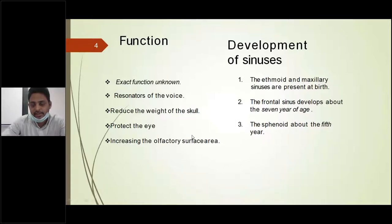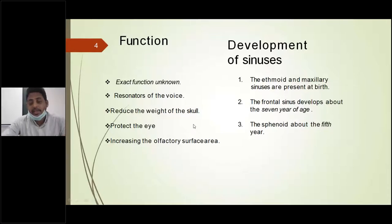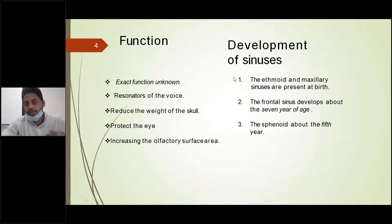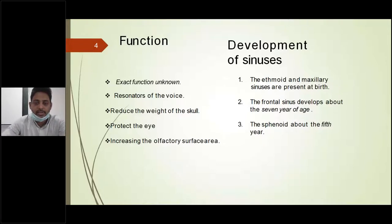Coming to the development of sinuses, among the four sinuses, maxillary and ethmoid sinuses are present at birth. Later, sphenoid and frontal sinus will develop at a later age. The last sinus to develop is the frontal sinus. From the MCQ point of view, the sinus present at birth is maxillary and ethmoid, and the last sinus to develop is the frontal sinus.